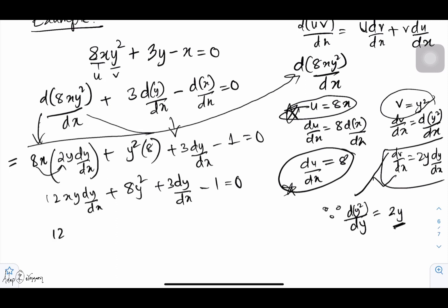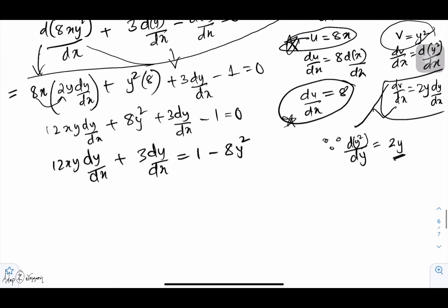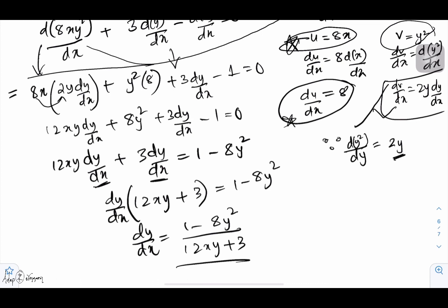Now, because the question is asking us to find dy over dx, we need to do some rearrangement here. Keeping all the dy over dx together and taking the rest to the other side, then finally dy over dx is common in both terms. So you have 12xy plus 3 inside, then this equals 1 minus 8y². So finally, dy over dx equals 1 minus 8y² over 12xy plus 3.